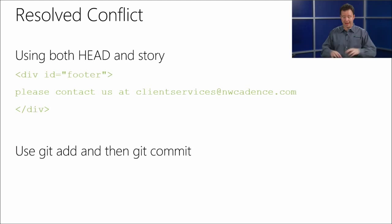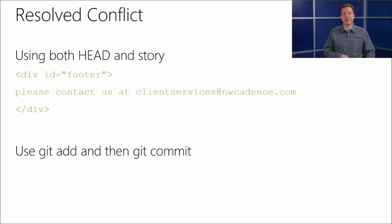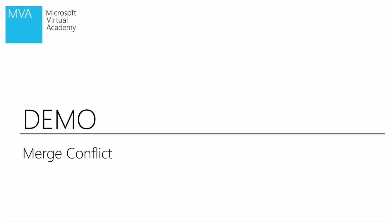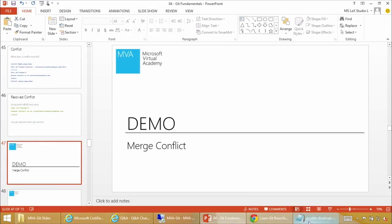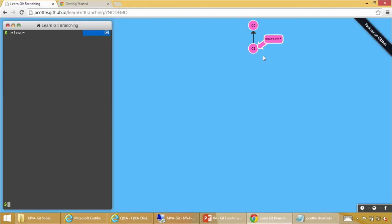For resolution, you go in and manually edit the file, get rid of all the extra conflict markers — otherwise Git will still think it's in the merge state. Then use `git add` and then `git commit` and you're done. Let's demo a merge conflict. But first, let me jump to LearnGitBranching and replicate the story-and-hotfix scenario visually.